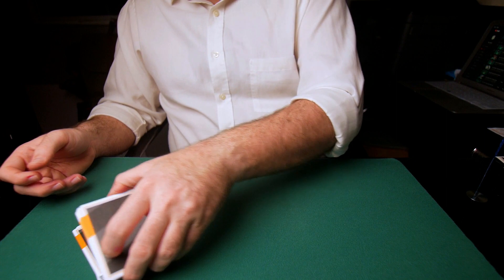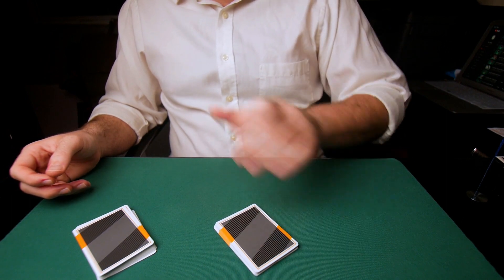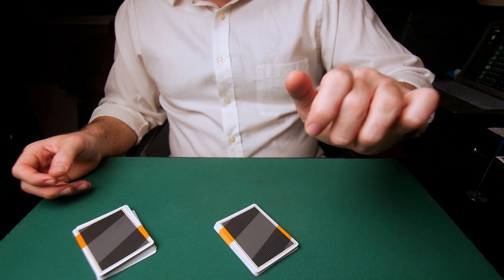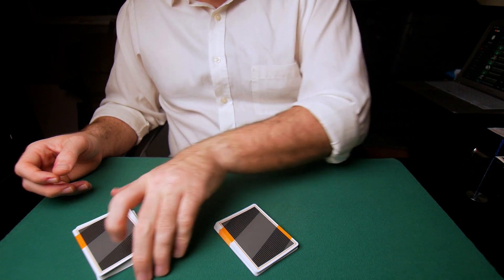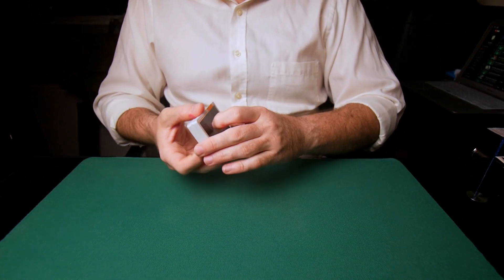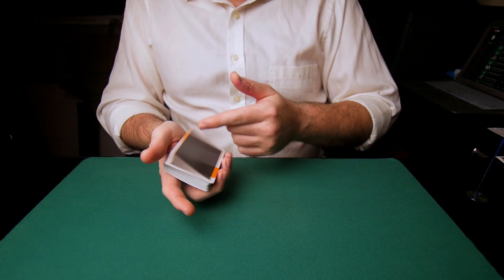The other player comes in and cuts. Remember, it's in and up. That's the movement. In and up. Anyone can complete the cut. And there you have access to the aces.